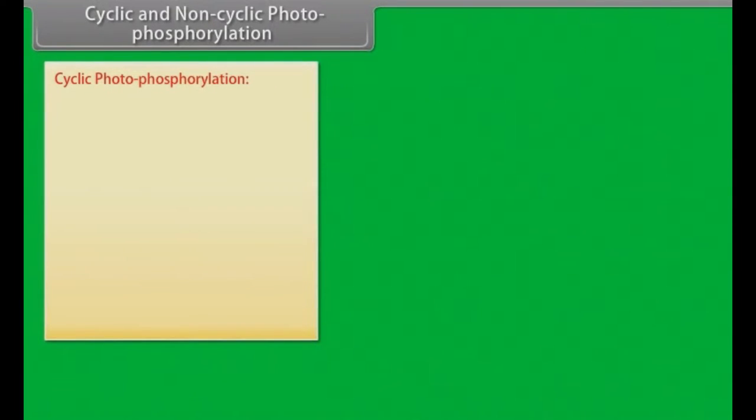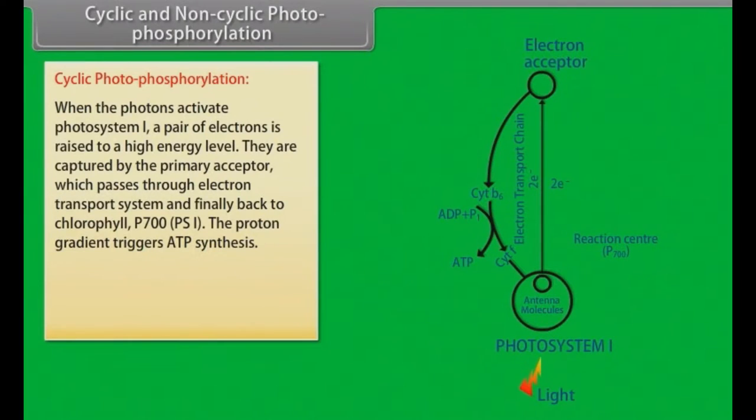Cyclic and non-cyclic photophosphorylation: Cyclic photophosphorylation. When the photons activate photosystem I, a pair of electrons is raised to a high energy level. They are captured by the primary acceptor which passes through the electron transport system and finally back to chlorophyll P700 or PS1. The proton gradient triggers ATP synthesis. As this process is cyclic, it is called cyclic photophosphorylation.